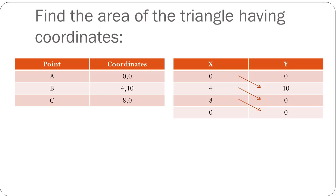Now suppose if I ask you all to find the area of a triangle having certain coordinates, some of you might draw the coordinates in the coordinate system and then use the distance formula to find the area. Some of you might know the shortcut to find the area of a triangle, but what if I ask you to find the area of a quadrilateral or a hexagon? That shortcut won't work. So for all polygons, to have a general approach to calculate the area, this method is really useful. So let's see how this method works.